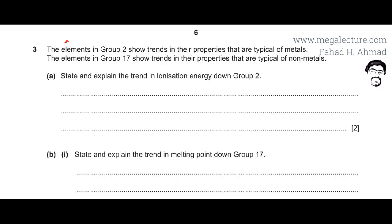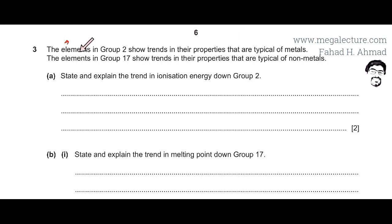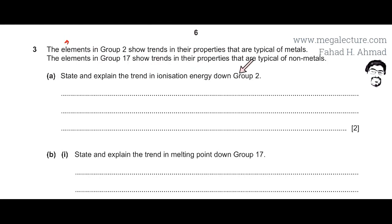The question states that elements in group 2 show trends in properties typical of metals, and elements of group 17 show trends typical of non-metals. We need to state and explain the trend in ionization energy down group 2.